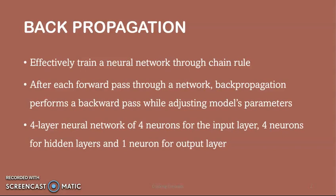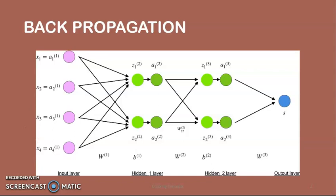In simple terms, after each forward pass through a network, backpropagation performs a backward pass while adjusting the model's parameters, which are weights and bias. Here I'll be using a four-layer neural network consisting of four neurons for the input, four neurons for the hidden layers, and one neuron for the output, which is shown in the figure here.